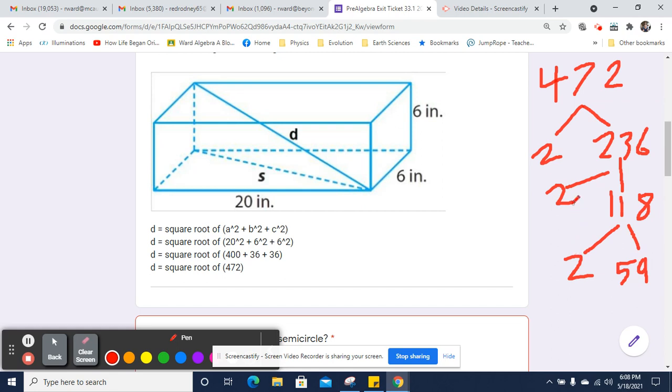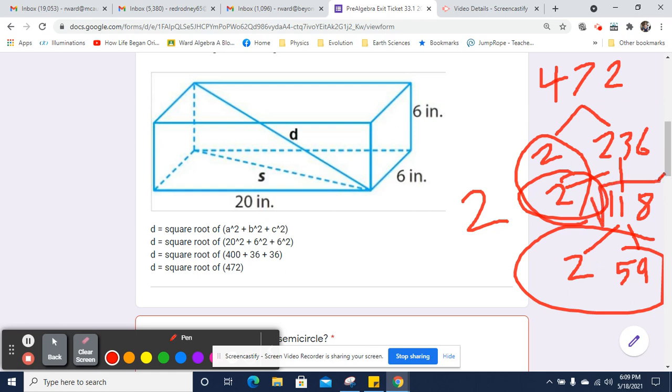So we're not going to be able to get any square roots out of just the 2 and the 59, but 2 times 2 is 4, so we can take just one of those out of square root jail. And so we'll be left with, when we get the square root of that, that'll be 2, and that's just going to be the square root of 118.